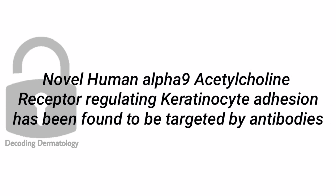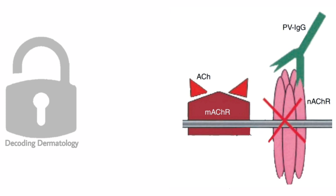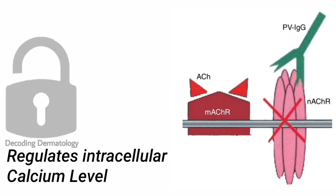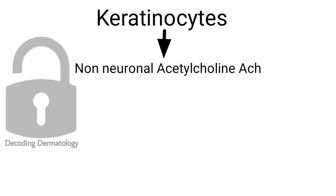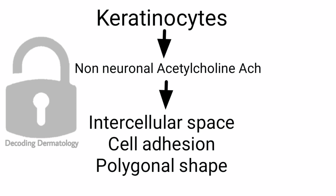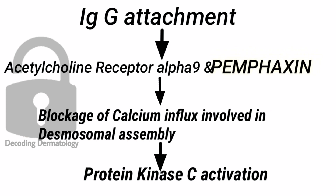Recently, a novel human alpha-9 acetylcholine receptor regulating keratinocyte adhesion has been found, and it has also been found to be targeted by pemphigus vulgaris autoantibodies. This novel class of cholinergic receptors with dual muscarinic and nicotinic nature regulates intracellular calcium metabolism. Non-neuronal acetylcholines synthesized by keratinocytes play an important role in cell adhesion, maintaining the intercellular space and the polygonal shape of keratinocytes. When antibodies attach to the acetylcholine receptor alpha-9 and pemphaxin, this leads to blockage of calcium influx involved in desmosome assembly and also results in protein kinase activation.